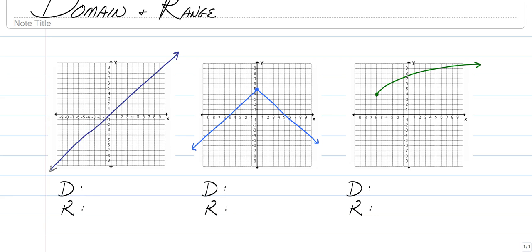So when you list domain and range of a graph, you want to list what are the values of x, and then for range, what are the values of y. And a lot of times it's going to be all real numbers, which means it's infinite number of answers.